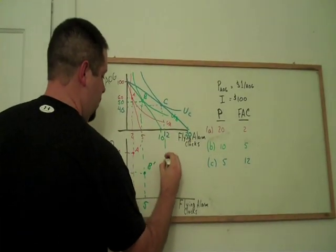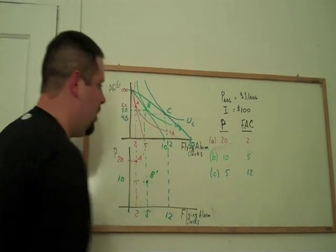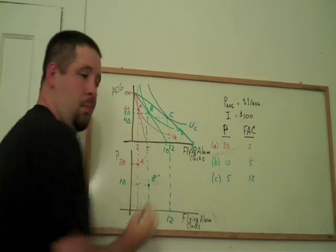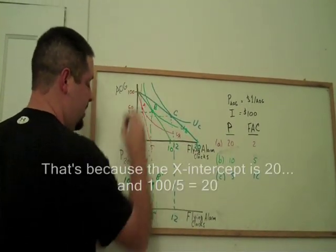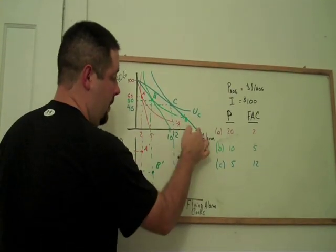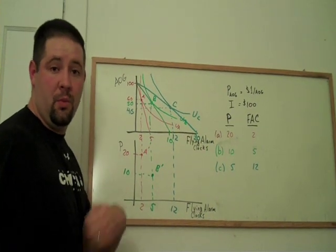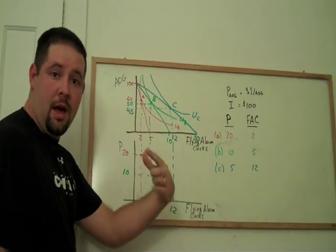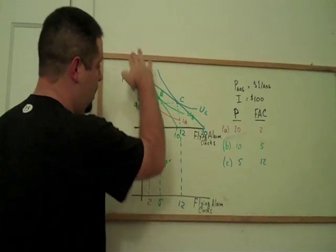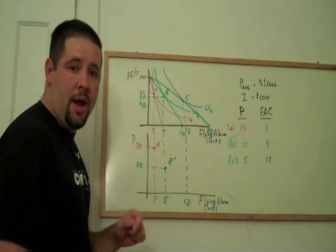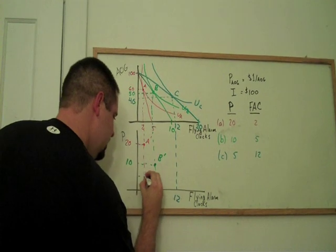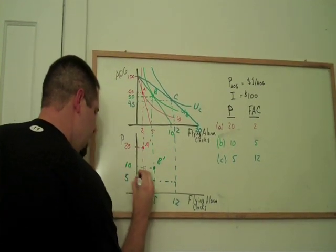This third point, tracing the quantity of 12 down here, we notice that at this quantity of 12, it must have been that the price was 5. Because if we look at this graph, we know that our flying alarm clocks, if we spend all of our money on flying alarm clocks, we can buy 20. Just reversing the math that got us this intercept, we could deduce just from looking at this graph that the price must have been $5 per alarm clock.